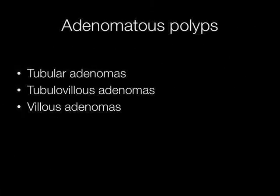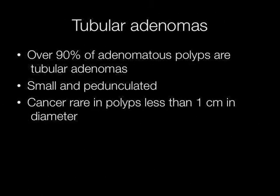Adenomatous polyps are either tubular adenomas, tubulovillous adenomas, or villous adenomas. Over 90% of adenomatous polyps are tubular adenomas. They tend to be small and pedunculated, and cancer is rare in polyps less than 1cm in diameter.